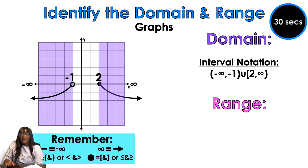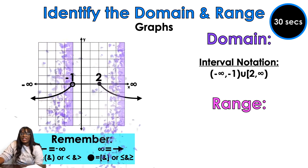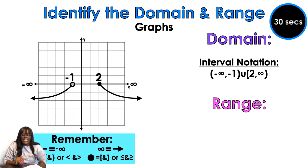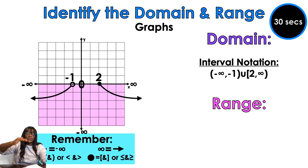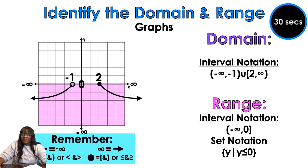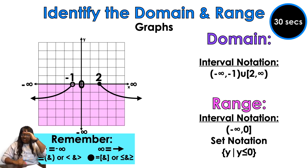And then a comma infinity in the parentheses. Okay, let's talk about your range. Your range is going to start at the bottom — those are arrows and those arrows go down forever and ever, so that's going to go all the way up to zero. We're going to say negative infinity to zero. There's a closed circle at the zero, so we're going to go negative infinity to zero with a bracket on the zero, and then y is less than or equal to zero.